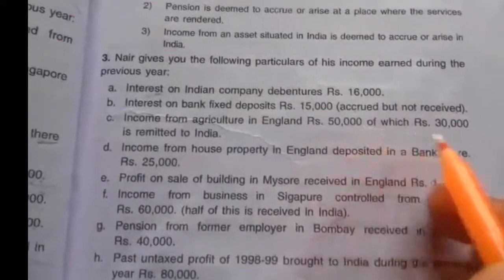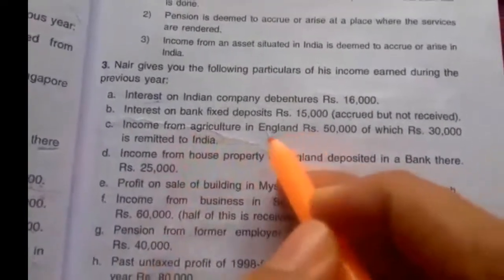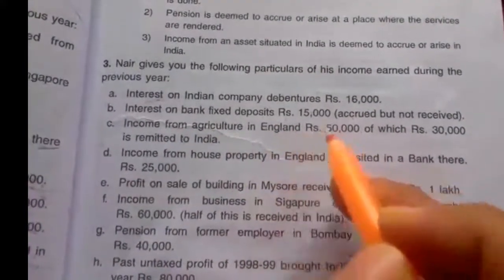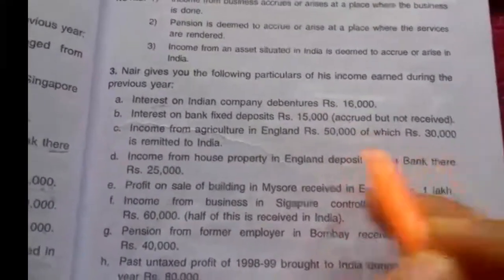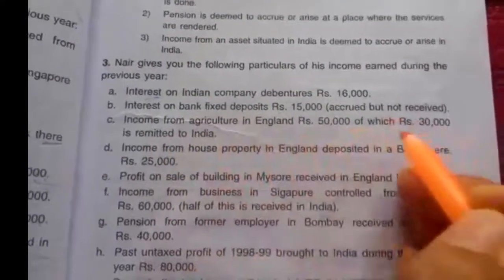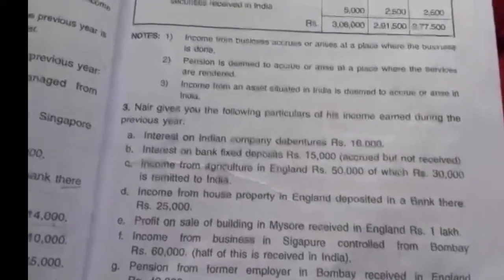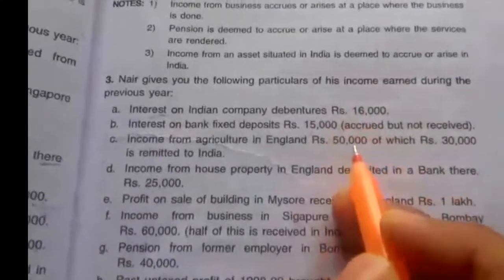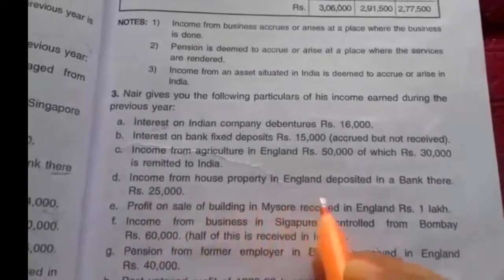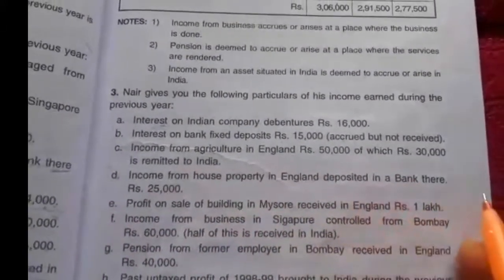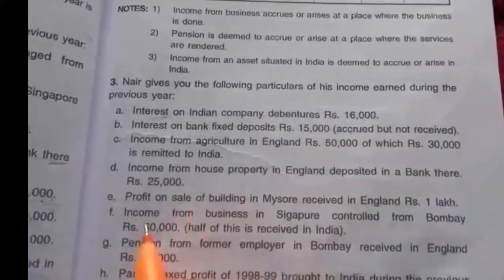Third, income from agriculture in England Rs. 50,000, of which Rs. 30,000 is remitted to India. Since the agricultural land is situated outside India, it is foreign income. Only Rs. 50,000 is taxable in the hands of the ordinarily resident; it is not taxable for not ordinarily resident or non-resident. Fourth, income from house property in England deposited in a bank there is also foreign income, taxable only in the hands of the ordinarily resident.